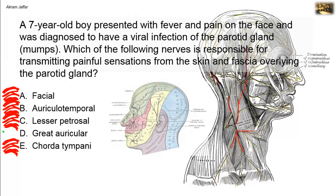The great auricular nerve supplies the skin and fascia over the parotid gland. In fact, this is the only part of the face not supplied by the trigeminal nerve. It is only the area of skin covering the parotid gland and the angle of the mandible whose sensation is carried by the great auricular nerve — making it the correct answer.